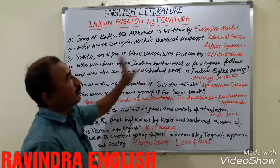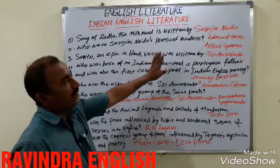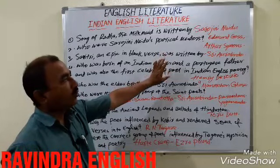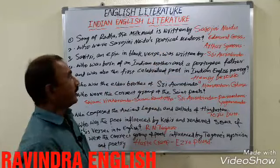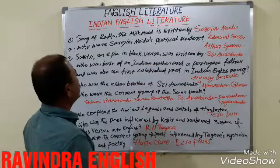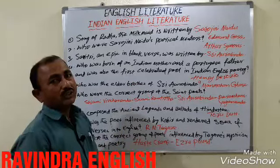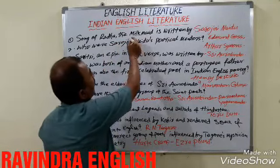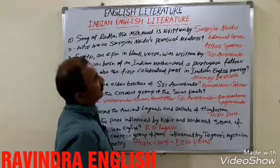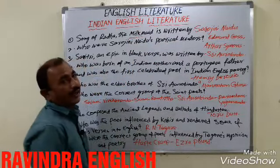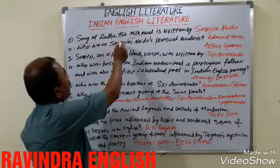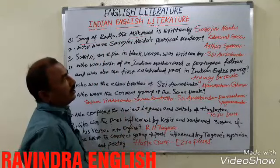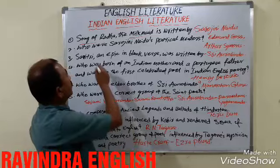This chapter is very important. Indian English writers, poets, and novelists are important. 'Sango of Radha the Milkmaid' is written by Sarojini Naidu. These two nouns are very important. 'Sango of Radha the Milkmaid' is written by Sarojini Naidu.